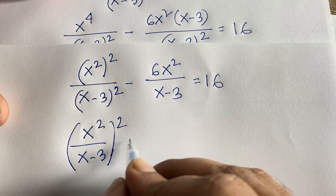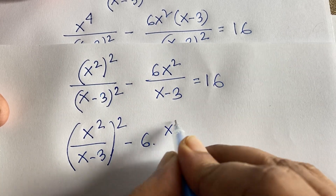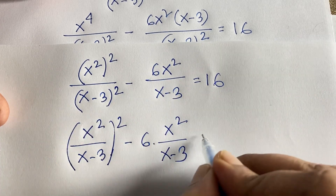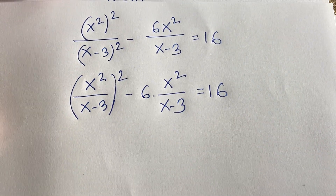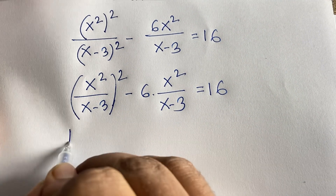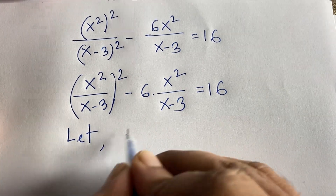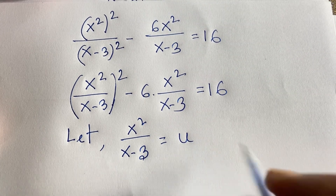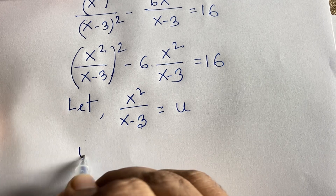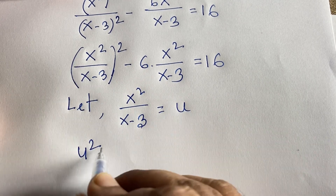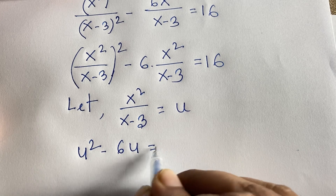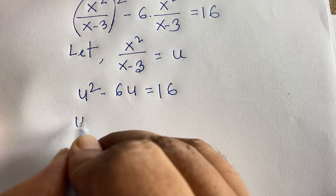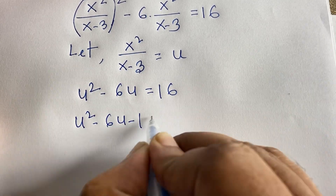Since square is common in the first term and x²/(x-3) appears in both terms, let u = x²/(x-3). Then the equation becomes u² - 6u = 16, or the quadratic equation u² - 6u - 16 = 0.